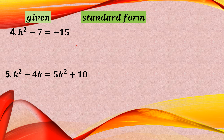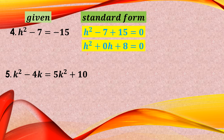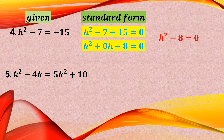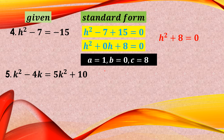Number 4: B squared minus 7 equals negative 15. We transpose negative 15 to the left — it becomes positive 15, and since both 7 and 15 are constants, they combine to give 8. Since there is no linear term, we write 0B as a placeholder. So the standard form is B squared plus 0B plus 8 equals 0, where A is 1, B is 0, and C is 8.